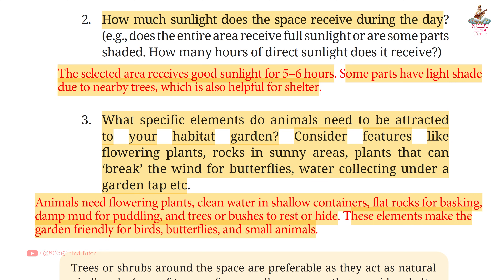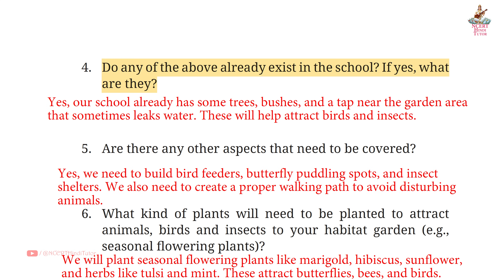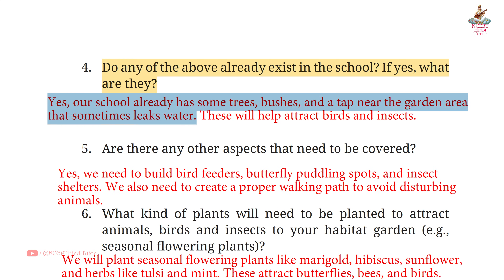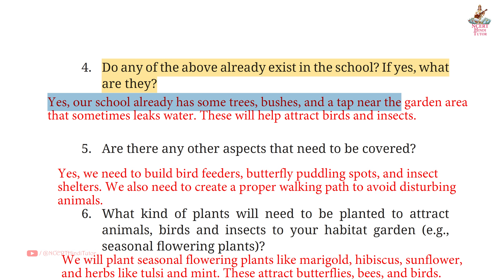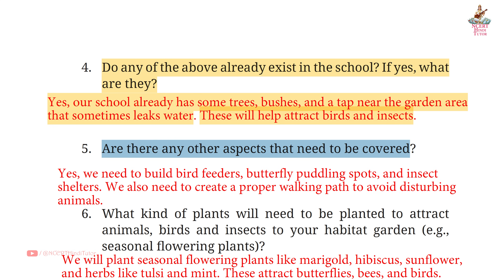Question 4: Do any of the above already exist in the school? If yes, what are they? Answer: Yes, our school already has some trees, bushes, and a tap near the garden area that sometimes leaks water. These will help attract birds and insects.